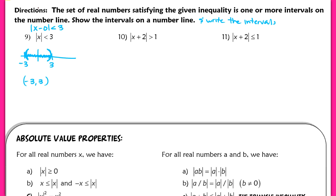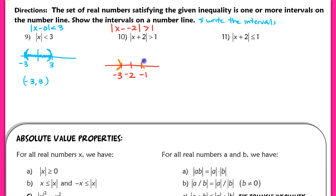For example 10, the absolute value of x plus 2 is greater than 1 means the distance between x and negative 2 is more than 1. On the number line, we go 1 unit away from negative 2 in both directions. Since it's strictly greater than 1, we use open parentheses at negative 3 and negative 1. In interval notation, the solution is the union of negative infinity to negative 3, and negative 1 to positive infinity.